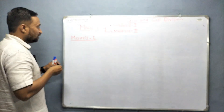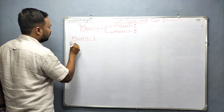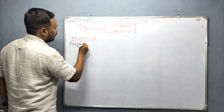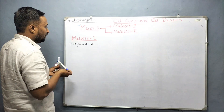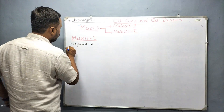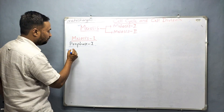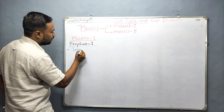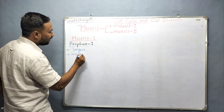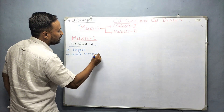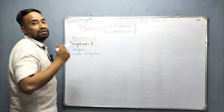In meiosis one, the first phase is called prophase one. Prophase one is typically longer and more complex than the prophase of mitosis.